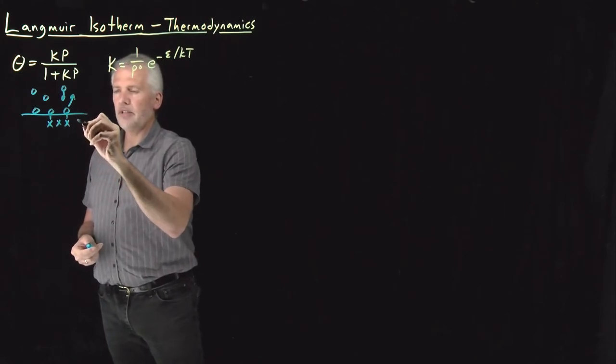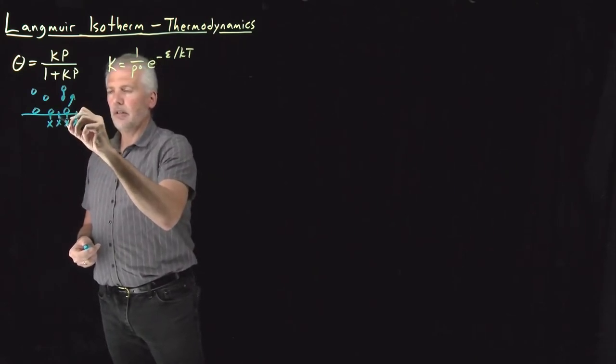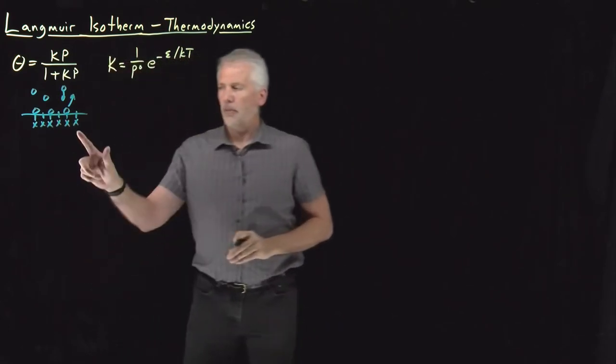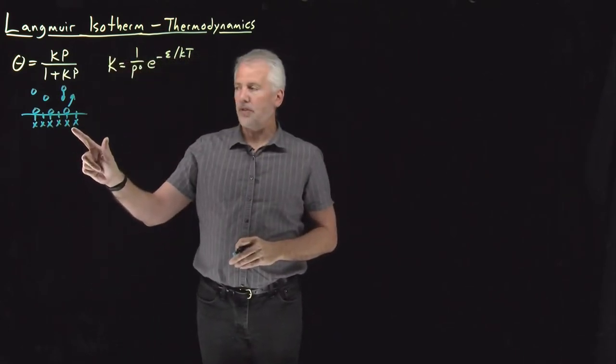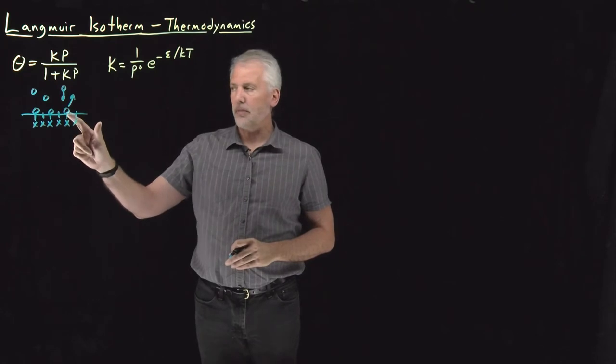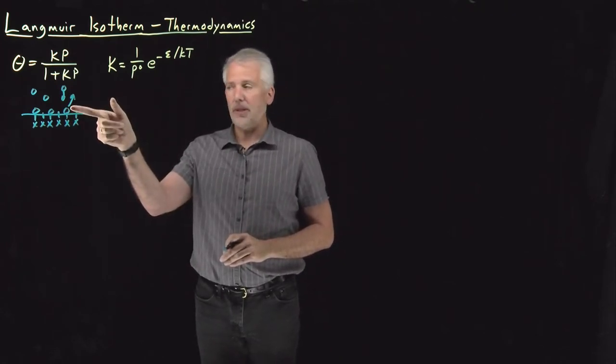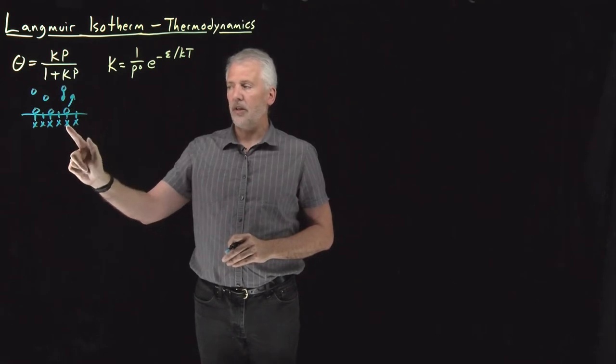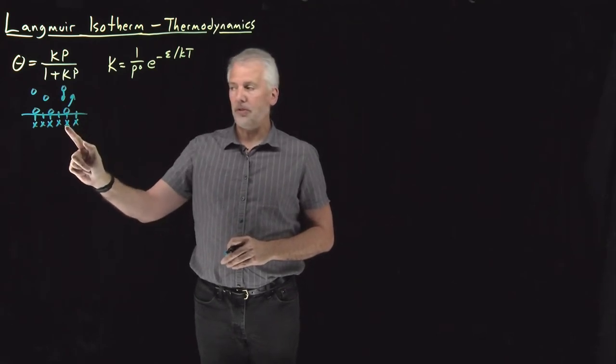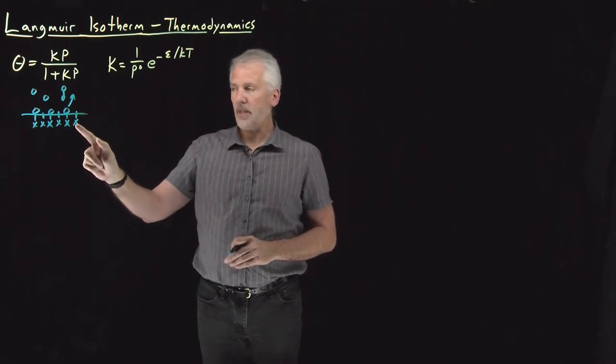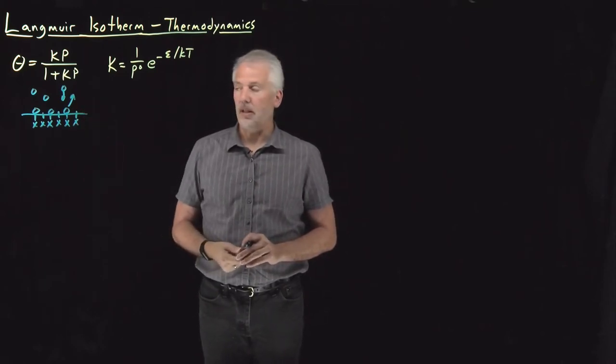We might have sites or positions on the surface that are not bound to any adsorbed species. So we have some unoccupied surface sites and some occupied surface sites. The O's that I've drawn here are the adsorbed species, the X's I've drawn are either the surface molecules that adsorbed species are bound to, or surface species that are empty, don't have anything adsorbed onto them.